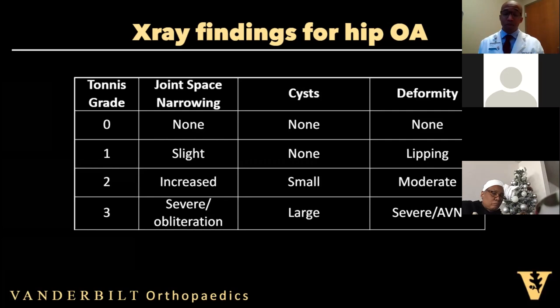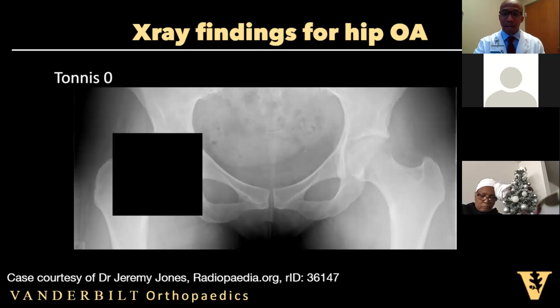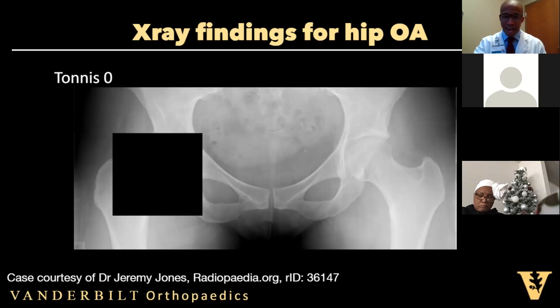Within the hip scoring, called the Tonus scoring system, also within the care path to refer back to. For Tonus zero, there is no joint space narrowing — this is a five millimeter space with weight bearing. The joint space is stable and almost appears to open up on the lateral side. We have no cysts present and no deformity of the socket — the acetabulum or the femoral head.